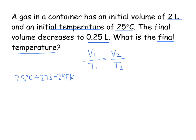Then I'm going to go back to my problem and plug in my variables. A gas in a container has an initial volume of 2 liters, so my V1 is 2 liters. An initial temperature of 25 degrees Celsius, so that is 298 Kelvin.